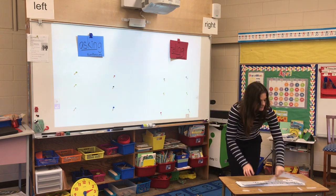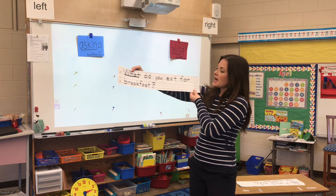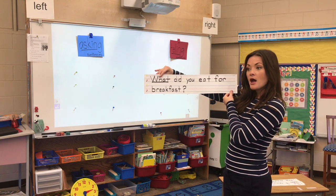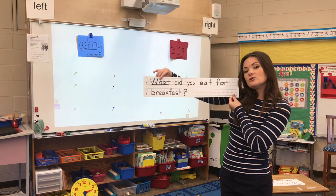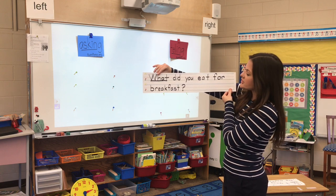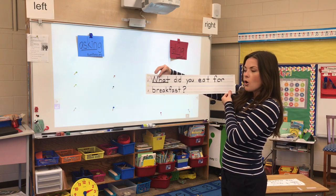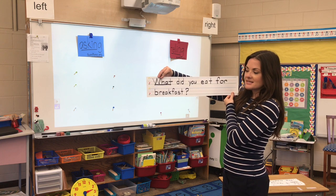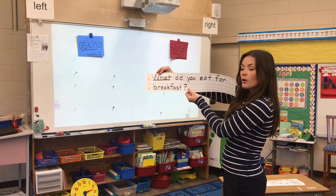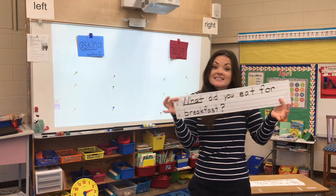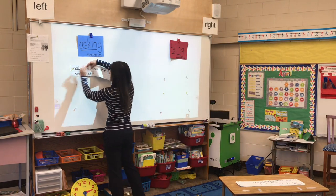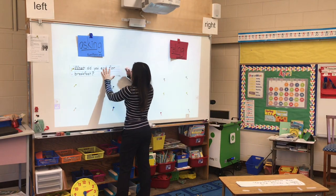Here's my first sentence. It says, 'What did you eat for breakfast?' Now there are two different clues in my sentence that will tell me what kind of sentence it is. I can see that the first word in my sentence is 'what,' and I can see that my sentence ends with a question mark. That tells me this sentence is an asking sentence — it is asking a question. So I'm going to put it over here under my asking side.